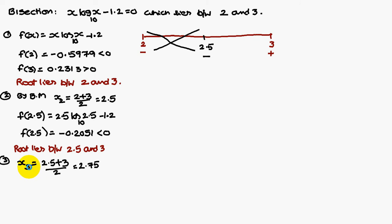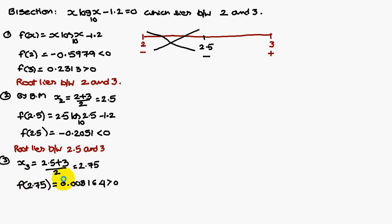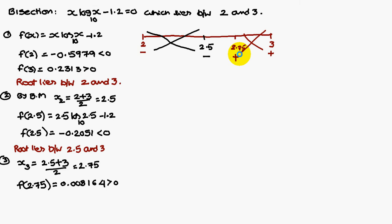Therefore, root lies between 2.5 and 3. Next, x₃ is equal to (2.5 + 3) / 2, that is nothing but 2.75. Now we have to find out the sign of f(2.75). f(2.75) is 0.008164, which is a positive value. That means the root lies between 2.5 and 2.75, since always the root lies between 2 consecutive opposite signs.